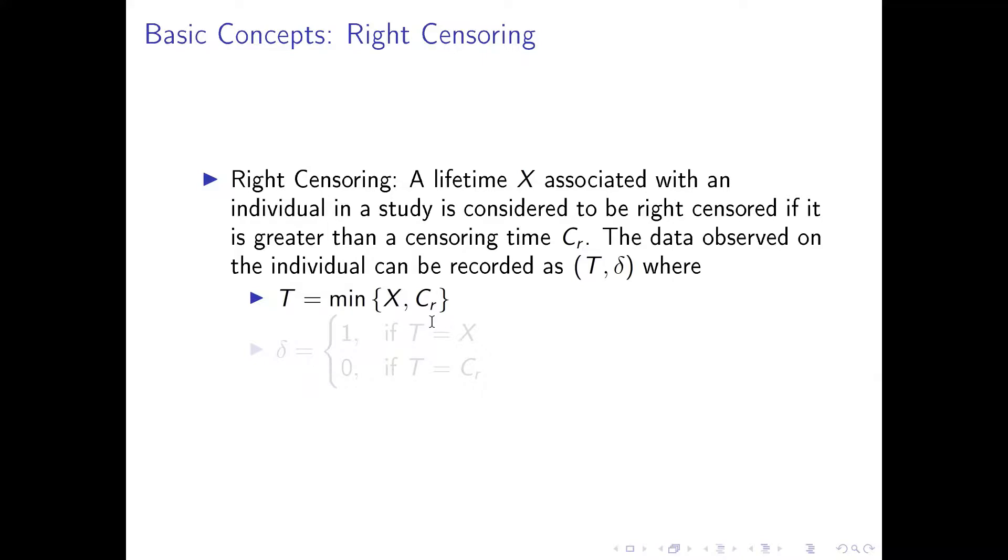So when the censoring time is smaller than time to event, what we'll have is the censoring time because we don't know exactly the time to event, because that's after the censoring time. When a lifetime is smaller than censoring time, what we observe is the time to event or lifetime X.